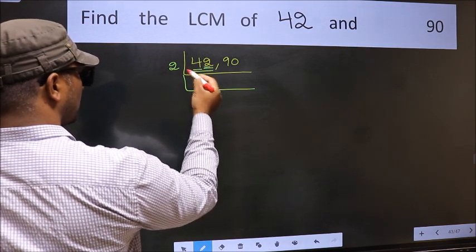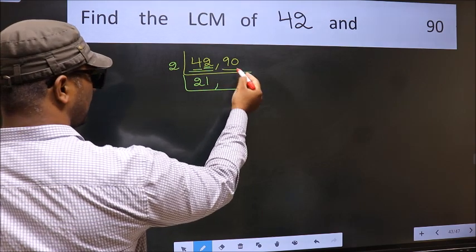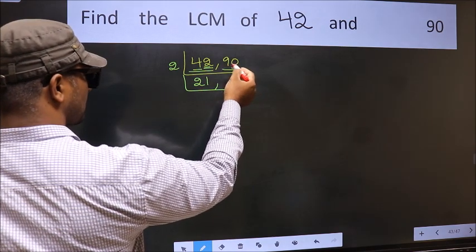The other number 2, when do we get 2 in 2 table? 2 times 1 is 2. Now the other number 90, last digit 0 so this is divisible by 2.